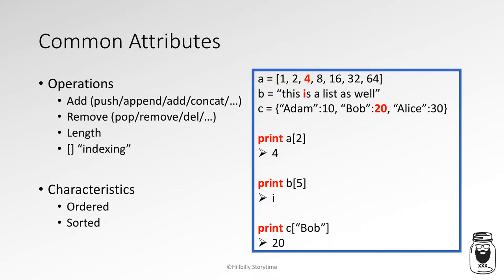Common attributes of lists, arrays, and maps include operations such as adding, removing, length, and indexing. Adding might be called push, append, add, or concatenate. Removing might be pop, remove, or delete. Length tells you the number of objects contained within the structure. Indexing uses square brackets where you type in a number. Functionality between lists and arrays tends to be about the same; it just depends on extra characteristics like whether you can resize them.